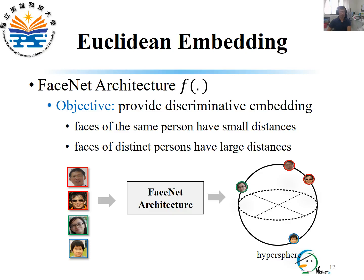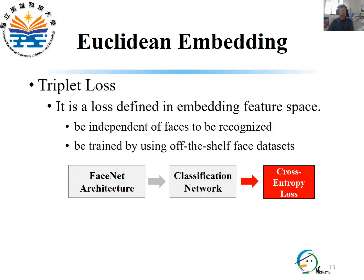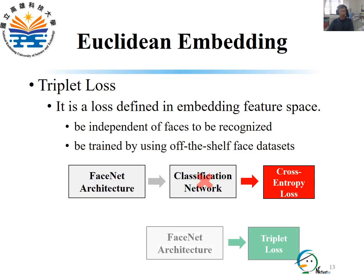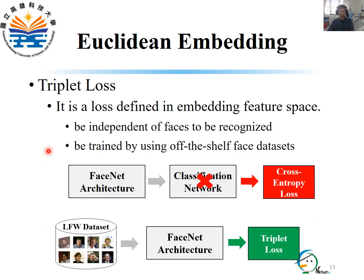The objective of FaceNet is to provide discriminative embedding. This means that faces of the same person after embedding should have small distance, and faces of distinct persons after embedding should have large distance. To achieve this, a loss function called the triplet loss is introduced to train FaceNet. Unlike loss functions such as cross-entropy loss defined at the class level, the triplet loss is directly defined in the embedding feature space. Therefore, its training is independent of faces to be recognized, and it can be trained using shared face datasets and applied to any other face applications without retraining.